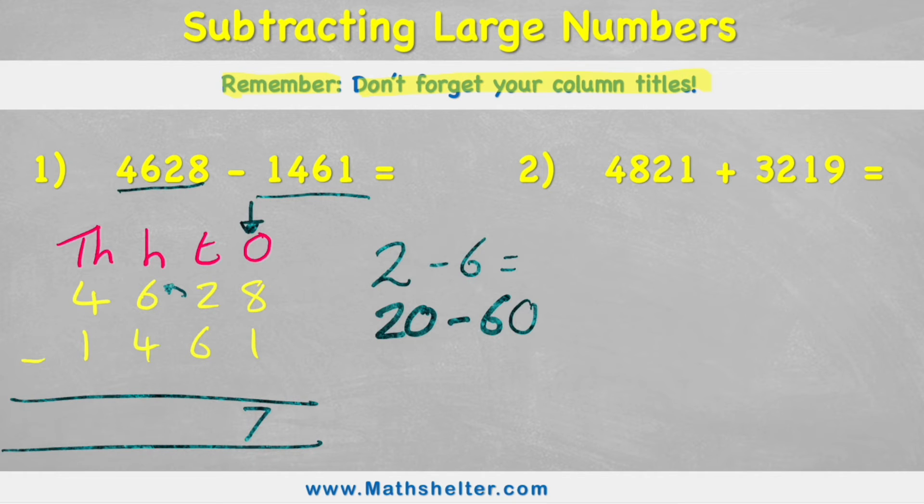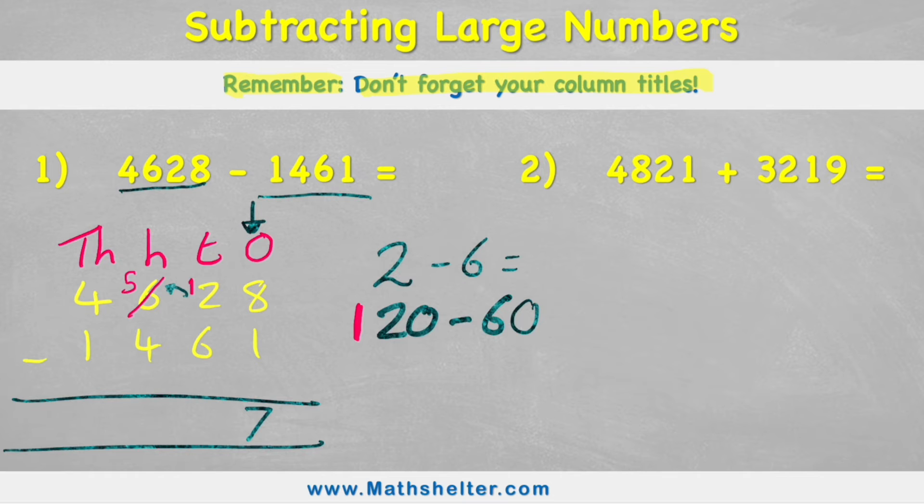So what I can do is I can look next door to my big brother and I can see I have a hundreds column, and at the moment I have 600. So I can just say to my friend next door, excuse me, can I borrow one of your hundreds? And that would mean this is now 500, and I'm going to borrow a whole hundred. So I've now added a hundred to this 20, which makes it 120. So now my question is 120 subtract 60, or 12 tens subtract 6 tens, because remember we're working in my tens column.